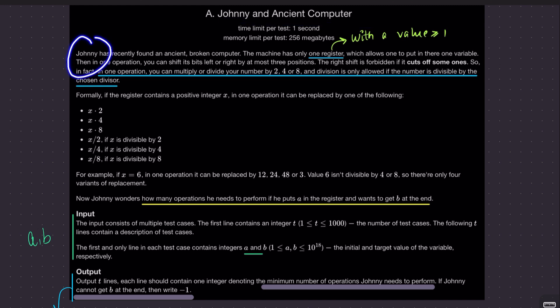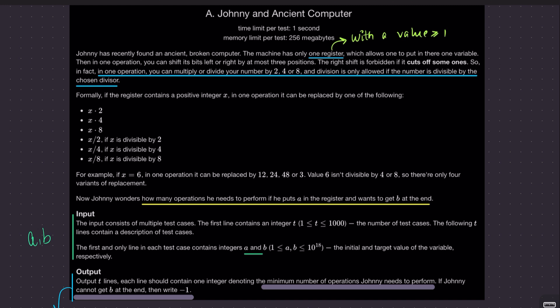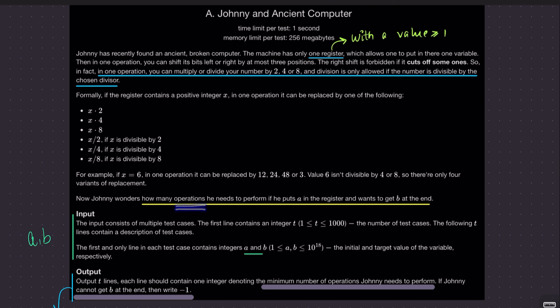I'll quickly summarize the question. Johnny has found a broken computer that has only one register with a value which is positive, greater than or equal to 1. There is an operation defined: multiply by 2, 4, or 8, or divide by 2, 4, or 8. When you divide, the number must be divisible by the divisor. Initially the register holds value A, and we want to convert it to B.